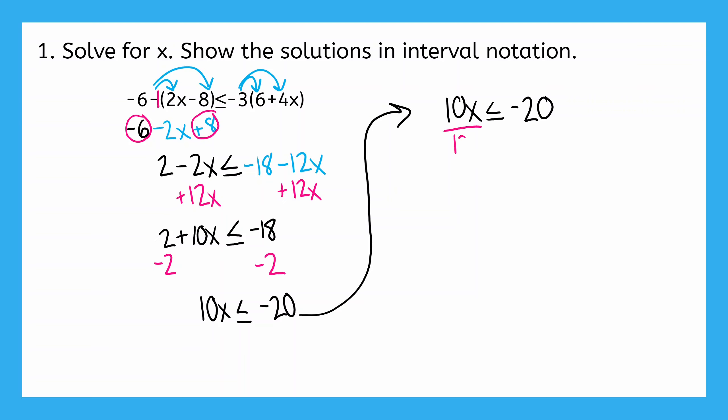Now I can divide by 10 to get rid of my coefficient and get a final answer with x on the left and negative 2 on the right. I did just divide by a number, but what I divided by was a positive number, so I'm going to keep the inequality symbol the same. This gives me a final answer of x is less than or equal to negative 2.